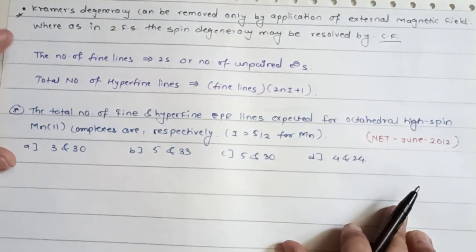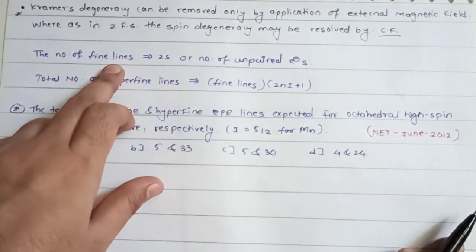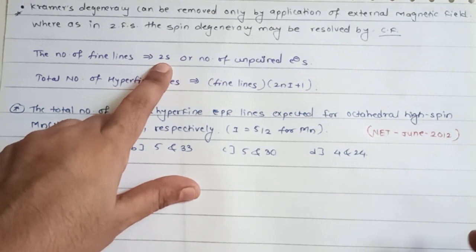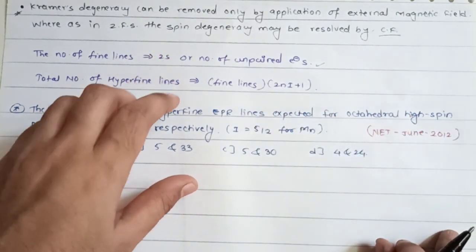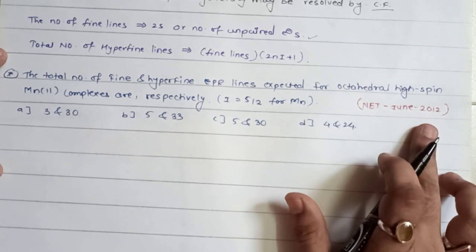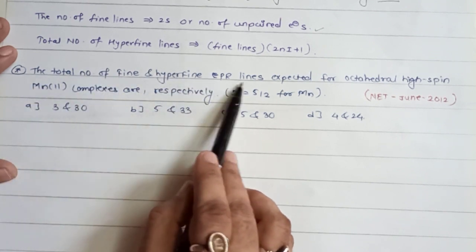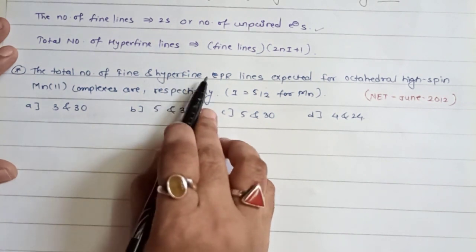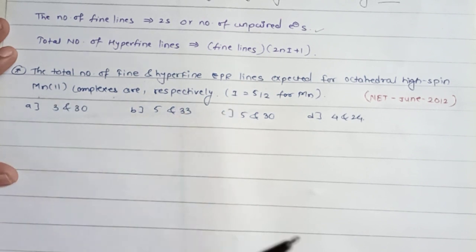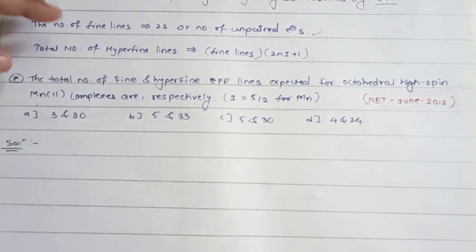For fine lines, the formula is 2S, where S is the number of unpaired electrons. Here is a question from June 2012 exam: the total number of EPR fine lines and hyperfine lines expected for octahedral high spin manganese(II) complexes. First find the electronic configuration of Mn²⁺ - manganese is atomic number 25, with configuration 3d⁵4s², and Mn²⁺ gives 3d⁵. Filling the d orbitals gives 5 unpaired electrons.